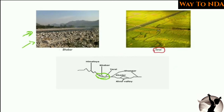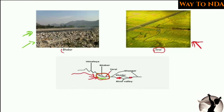Looking at the image, you can see the Bhabar area where the river flows from the Himalayas into the plains carrying boulders. The river disappears in this area and again rises in the Tarai region. Then you will find Khadar, made up of newer alluvium, and Bhangar, made up of older alluvium deposits.